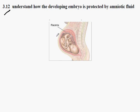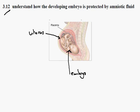In the diagram, the placenta is shown here and the uterus wall is shown there. Here we have the embryo, which is fairly advanced, and surrounding the embryo, inside this space — the uterus space — is a fluid called the amniotic fluid.